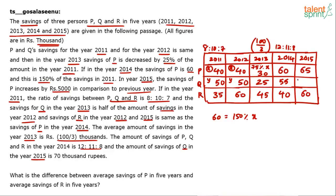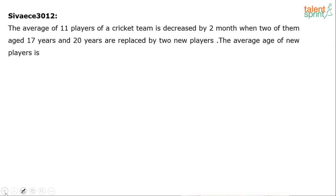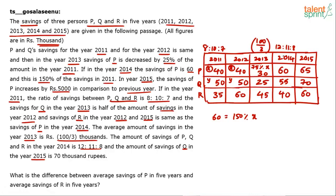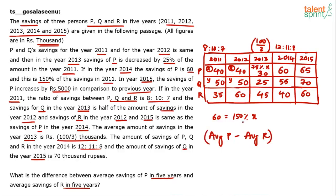Now you can answer the questions very easily — filling the table takes about one and a half to two minutes, then questions follow quickly. Our question asks for the difference between the average savings of P over five years and the average savings of R over five years.